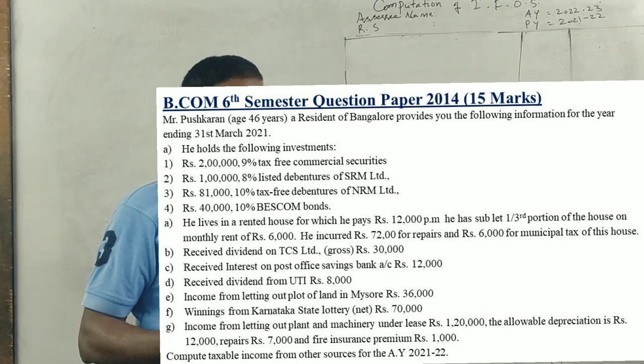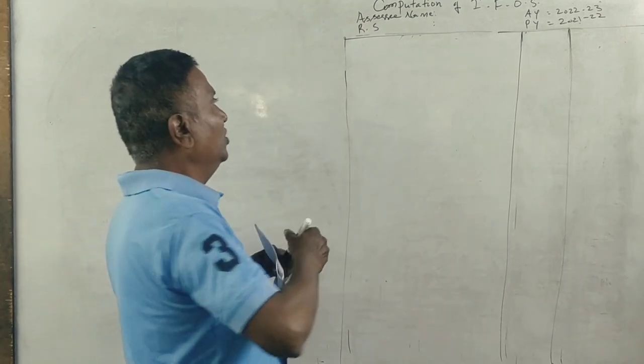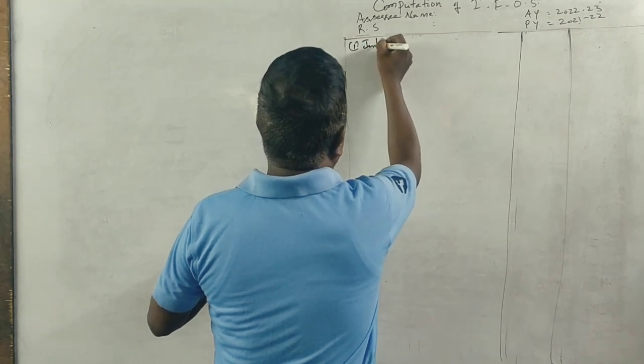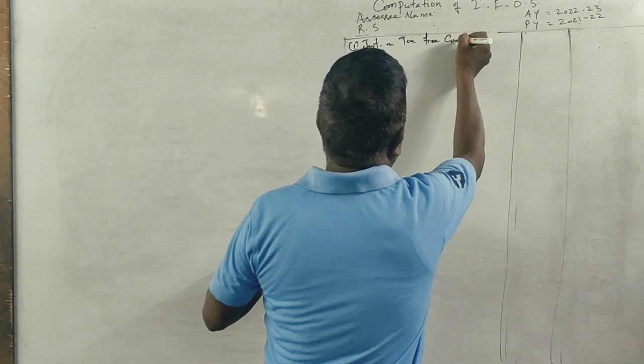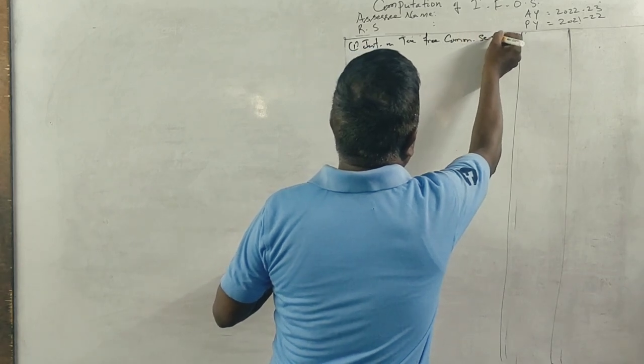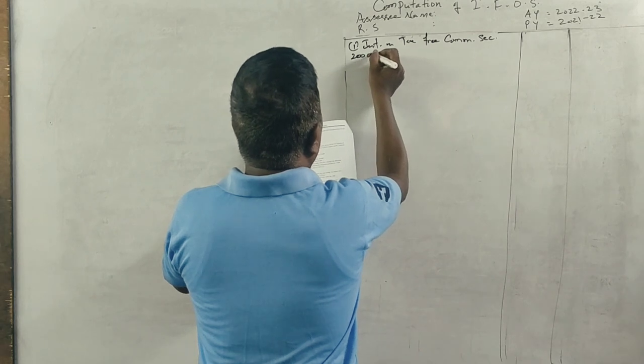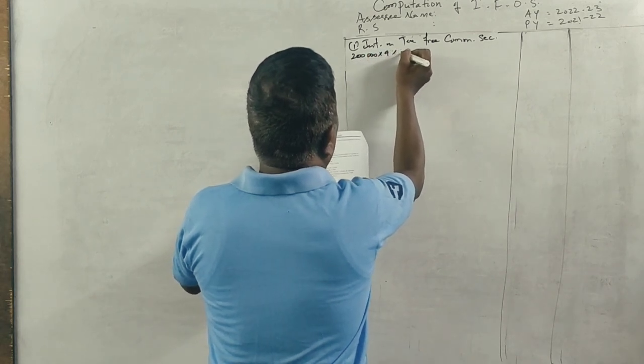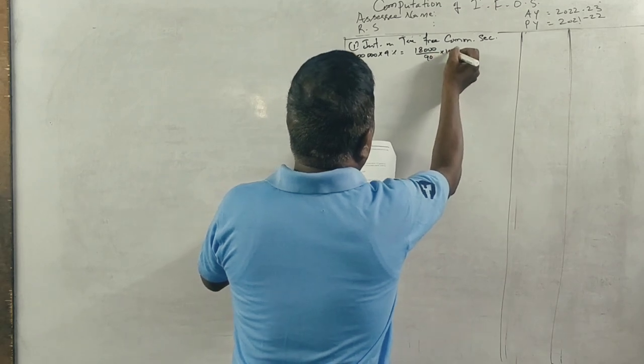One of them is tax-free, so interest on tax-free commercial securities is 2 lakhs at 9%, which equals 18,000. Divided by 90 into 100.